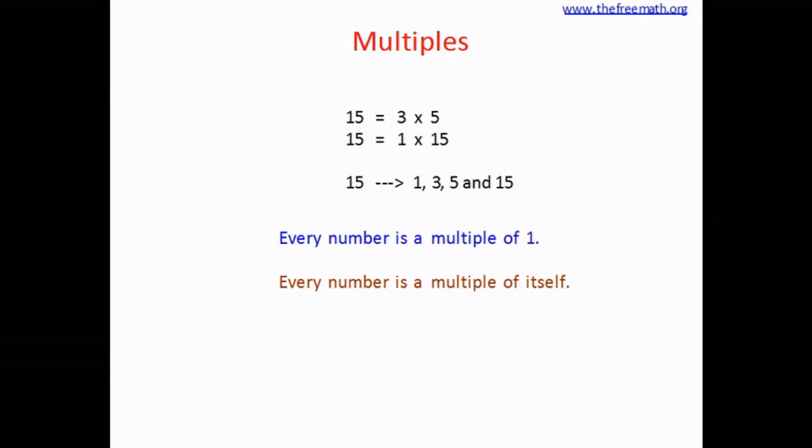Now let's go back to all the numbers of which 15 is a multiple: 1, 3, 5, and 15. You can see that 1, 3, and 5 are smaller than 15, and 15 is equal to 15. So what we can say is a multiple of a number is equal to or greater than the number.